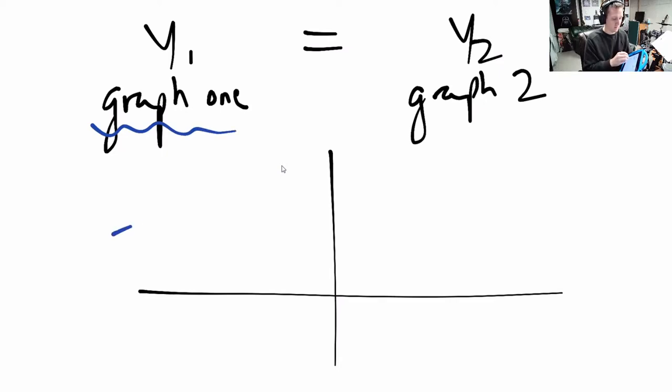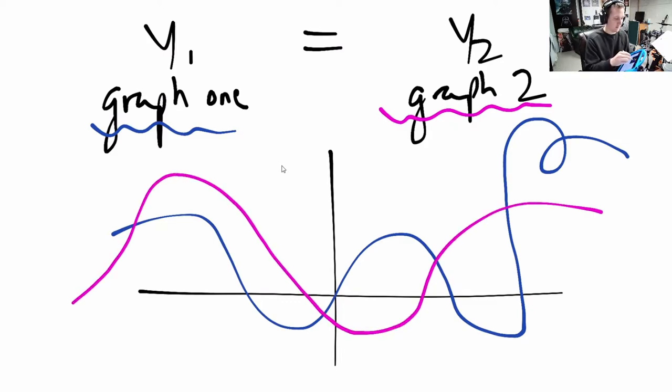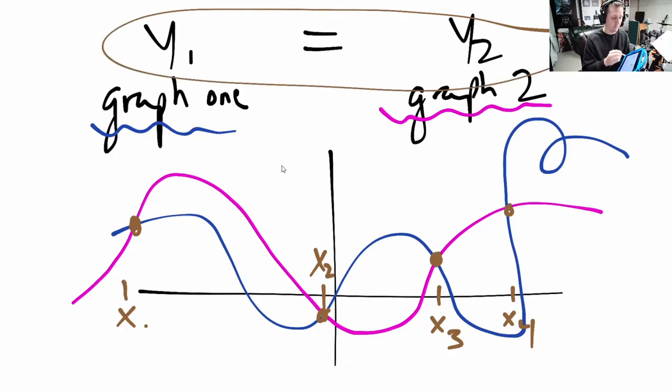So this is graph 2, and I will just randomly draw here. This one will be in blue, so here's my first one. Here's my second one in pink. These two, this equation has solutions, so they are equal at every x. I'm going to list them: x₁, x₂, x₃, x₄.